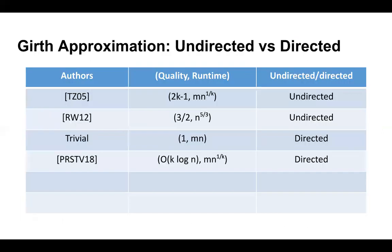For girth approximation algorithms in undirected graphs, you can get a 2k−1 approximation in m·n^(1/k) time — essentially a constant approximation in time arbitrarily close to linear — and a 3/2 approximation in quadratic time. In directed graphs, beyond the trivial algorithm running Dijkstra from every vertex in time mn, the only known result is from PRSTV: a k·log n approximation in time m·n^(1/k). This is a log n factor worse than undirected graphs in the same runtime, and not a constant approximation due to the logarithmic dependence on n. So it's natural to ask: can we get a constant factor approximation for directed graph girth in time better than mn?